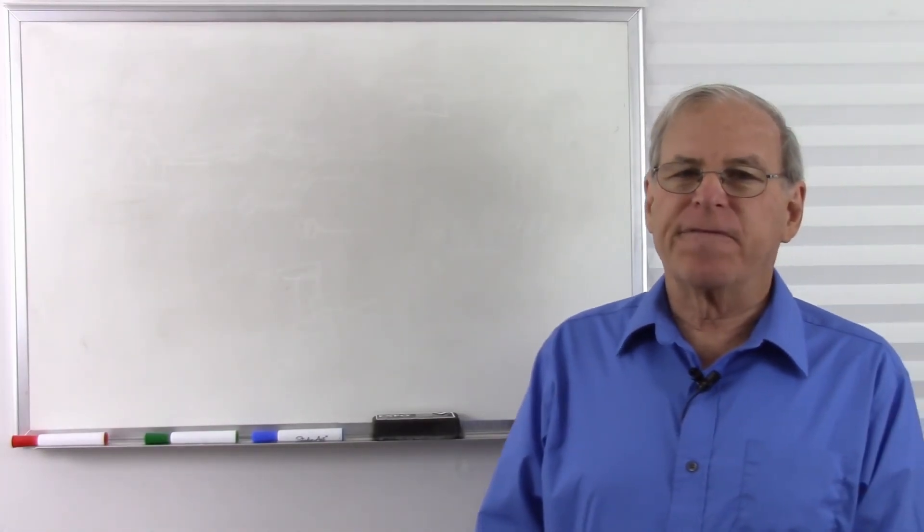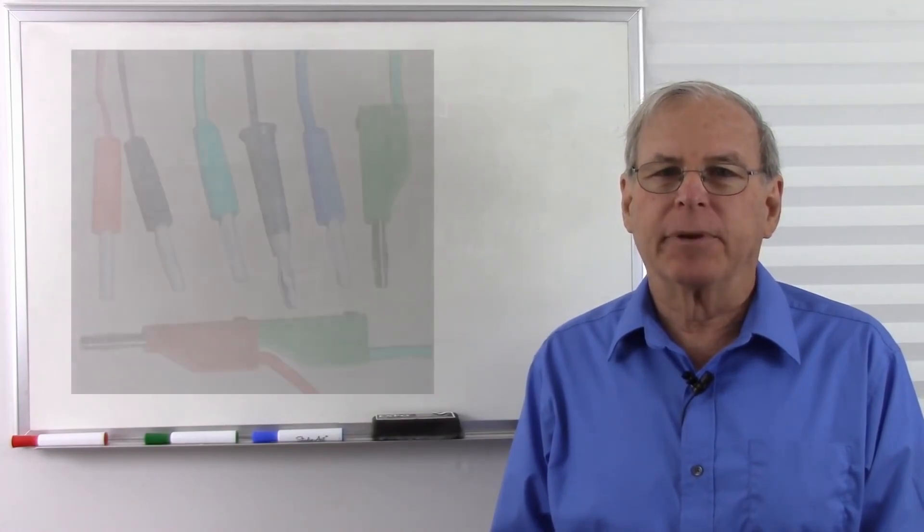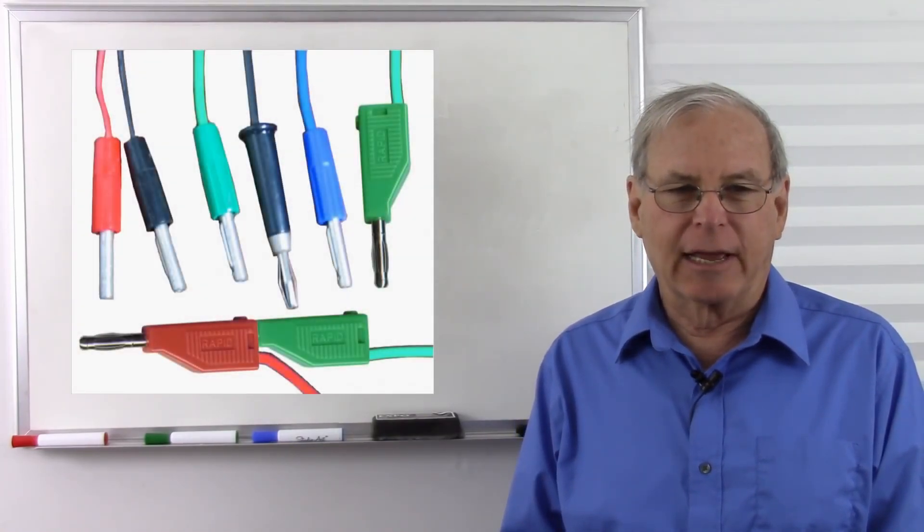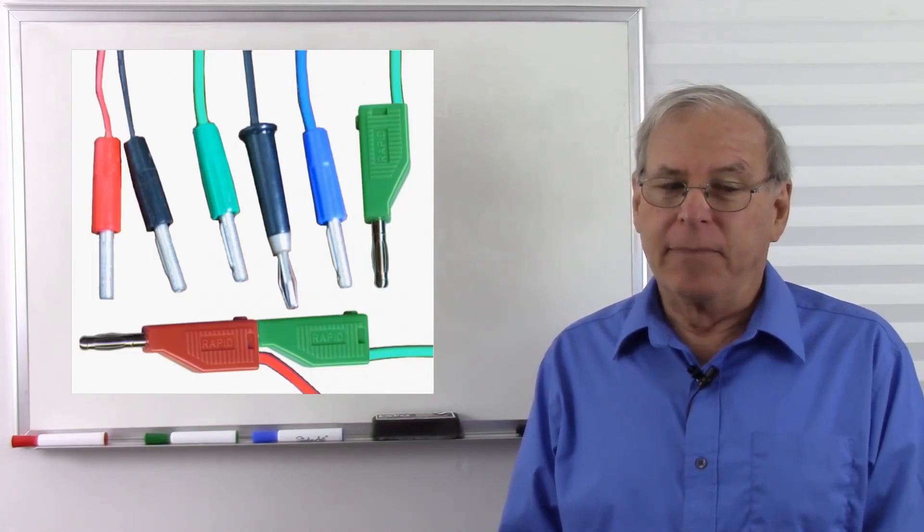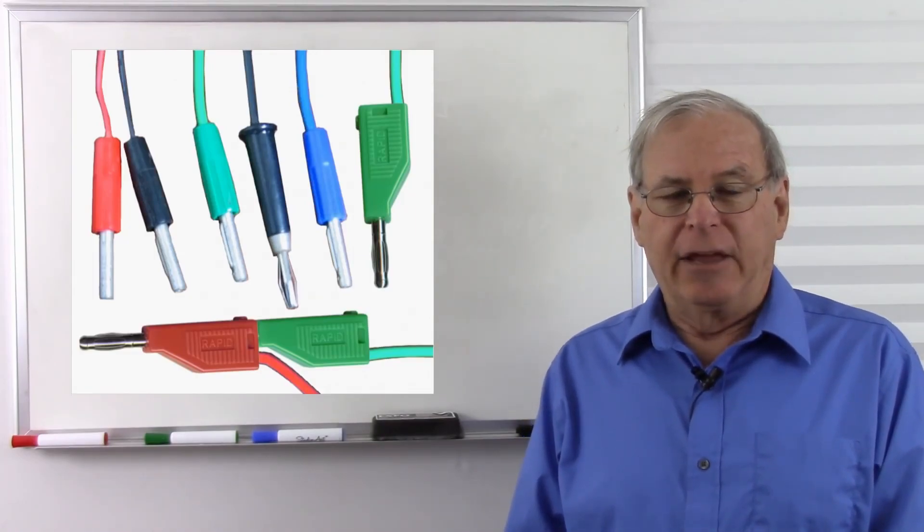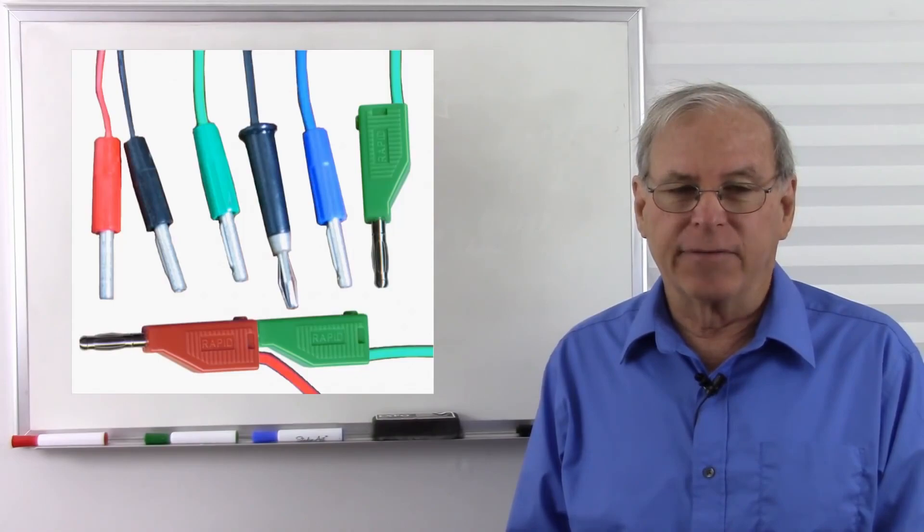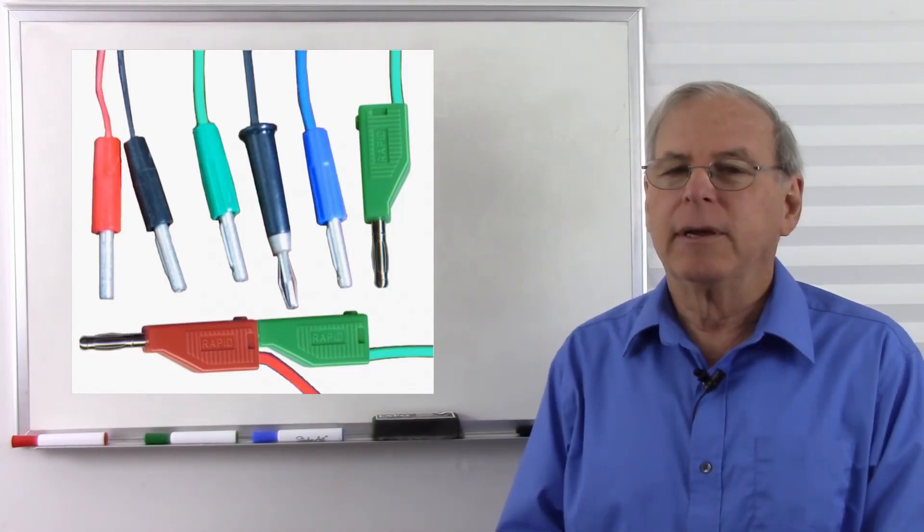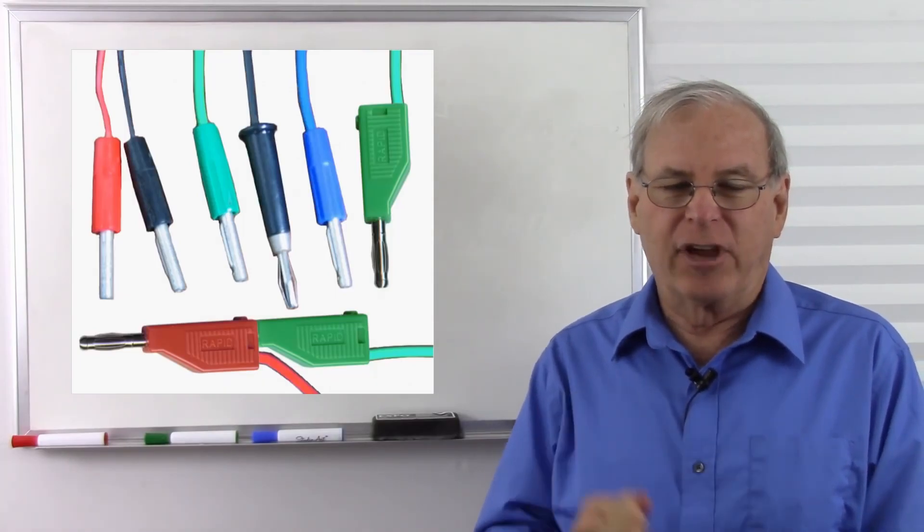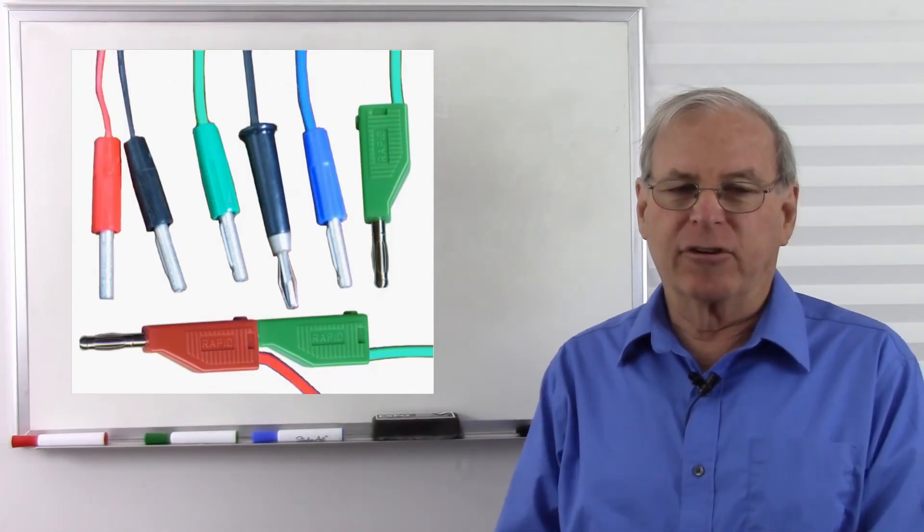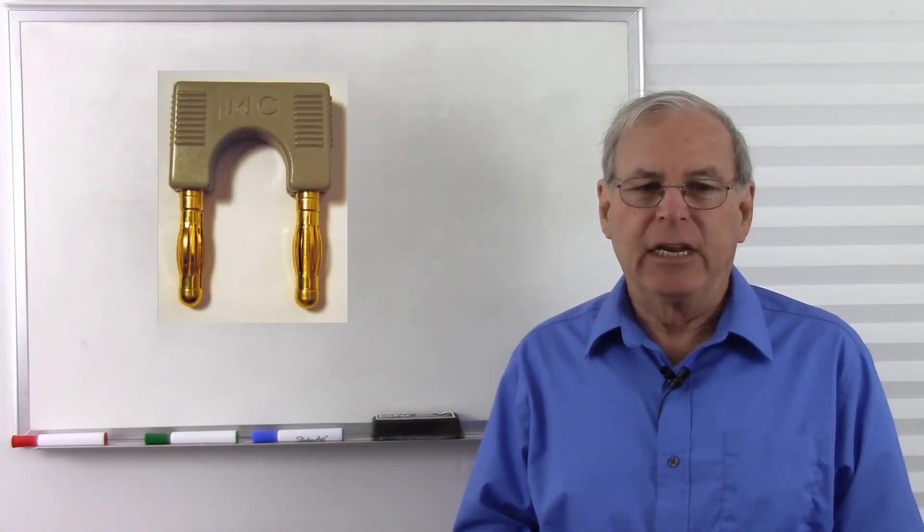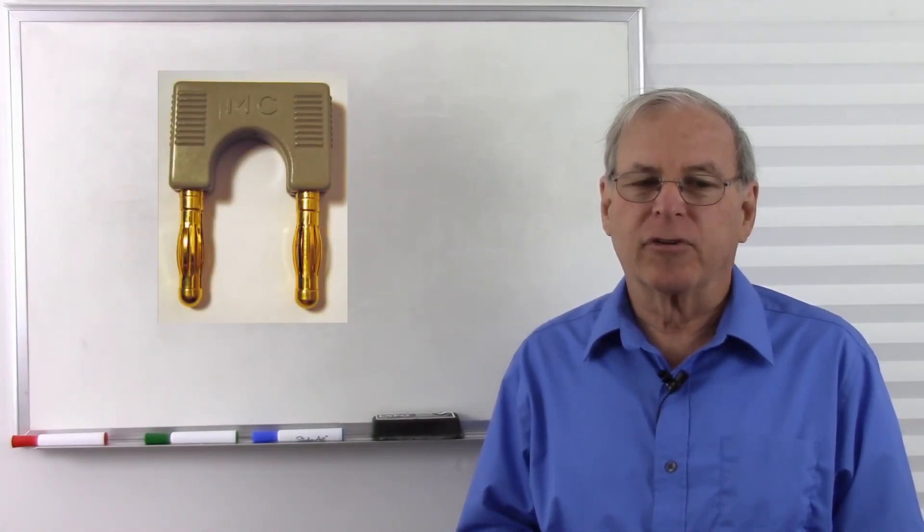The second type we have here is a very common connector called a banana plug. It's called a banana plug because it's kind of long and skinny like a banana, but it's not curved. There are styles that have both a plug and a socket together, so you can have multiple banana plugs daisy chained on top of each other to make your connection. These are very common in test equipment. And here we have a double banana plug, which is also fairly common.